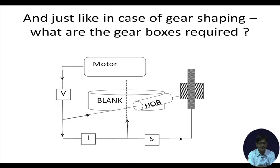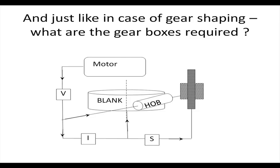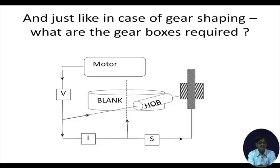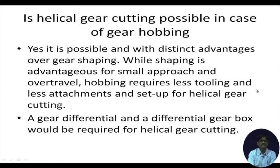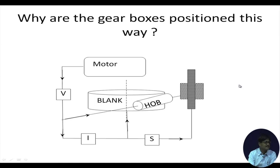That means: how many millimeters of hob movement will take place vertically downwards by the time the blank rotates once. So we understand that there are three gearboxes having these three functions. Now, just like in the gear shaping machine, let us have a quick look at whether the positions suggested for these gearboxes are unique, or whether there can be other configurations which would serve the same purpose.